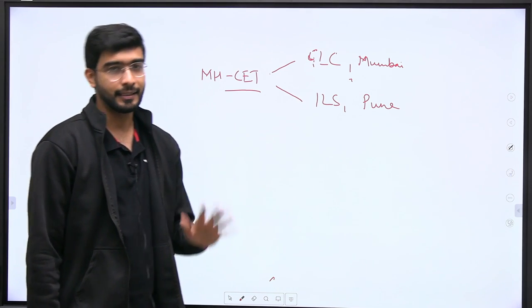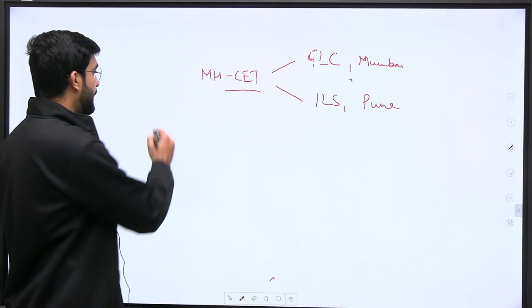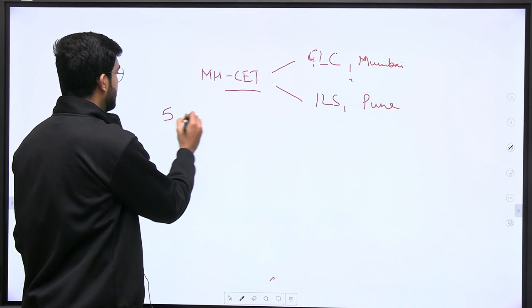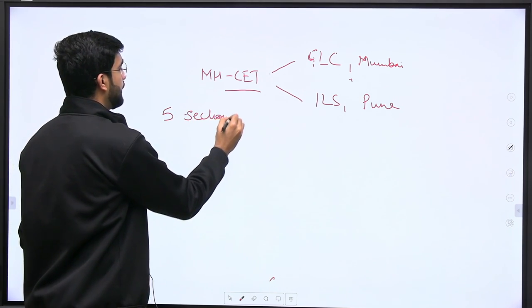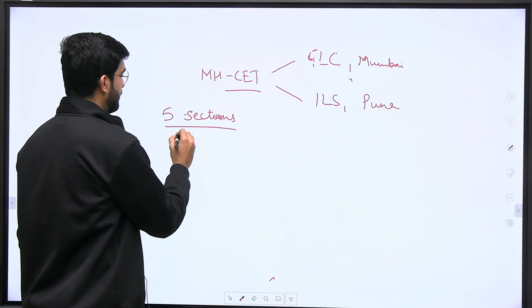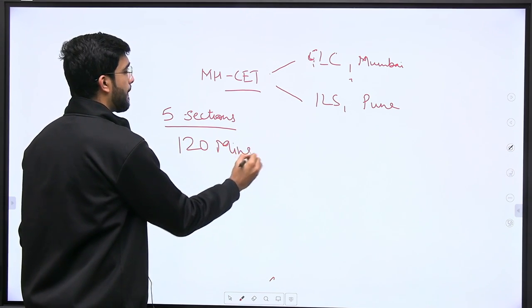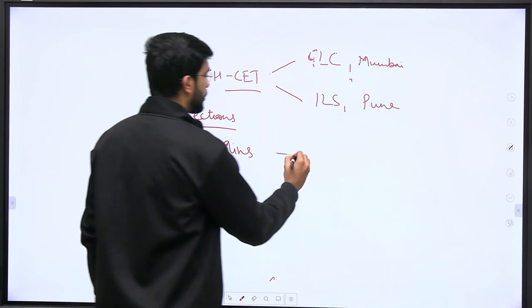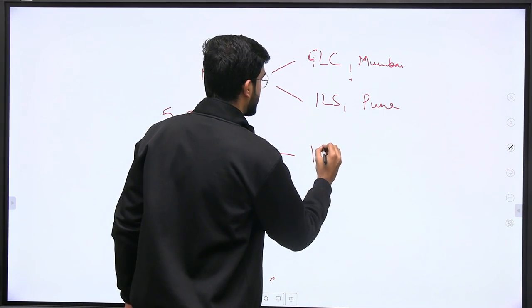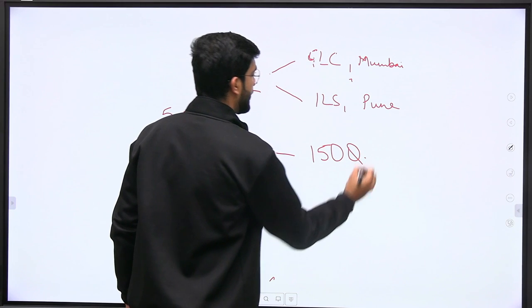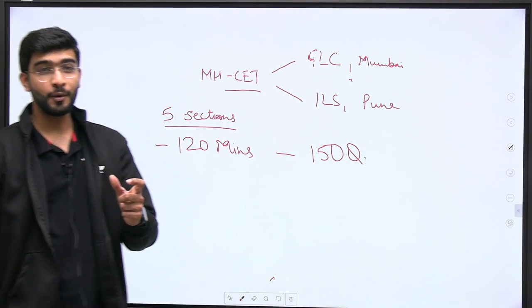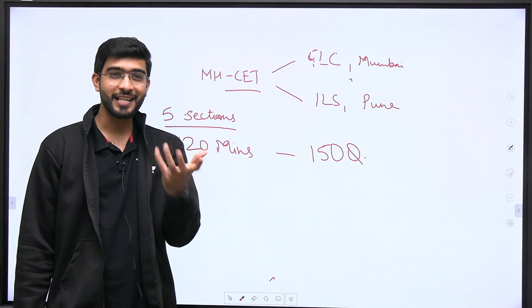Now, what is MHCET? Let's understand that also. So, you have 5 sections in CLAT. It has 5 sections like CLAT. Exactly same amount of time you get. You get 120 minutes to do that particular exam. And in 120 minutes, you have to do 150 questions.